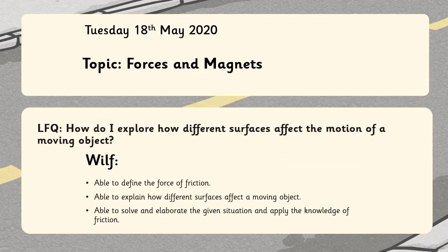Today we are going to learn about how different surfaces affect the motion of a moving object. This is the RLFQ and the date. You don't need to write a topic again because we've already written it in the first lesson.